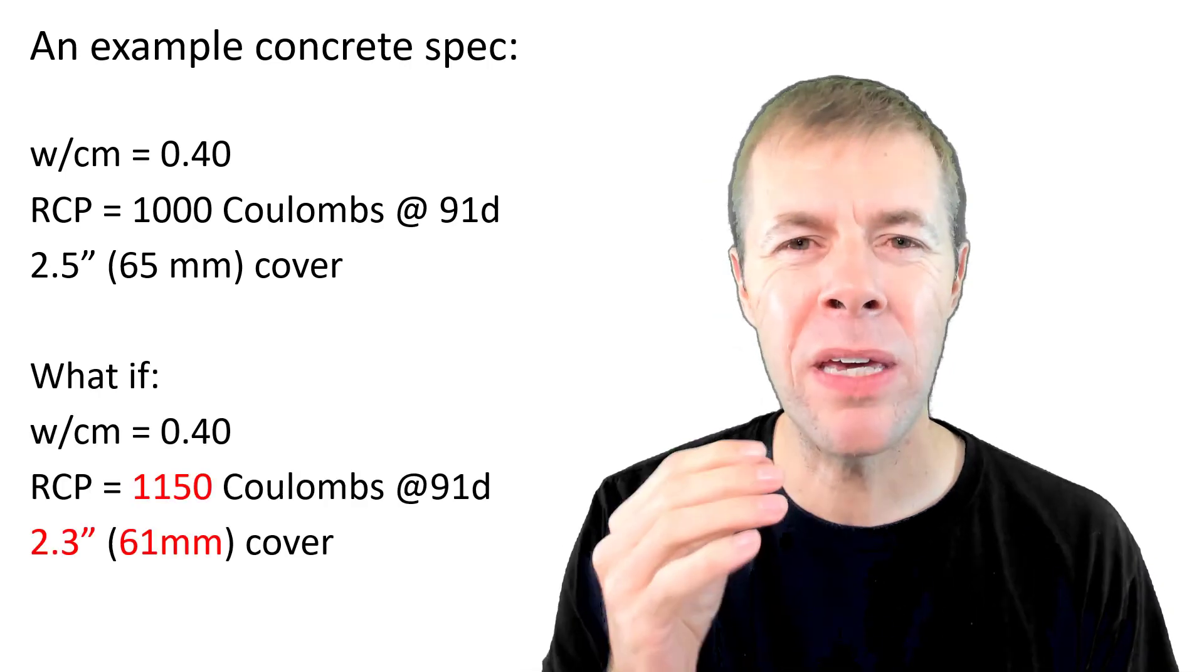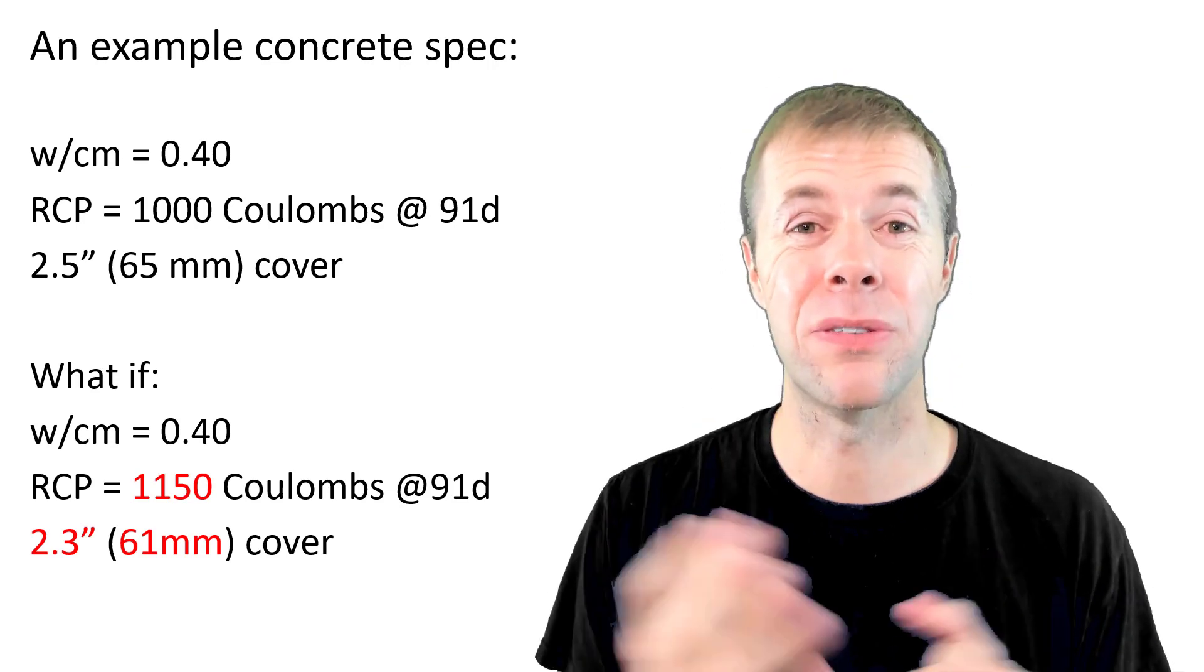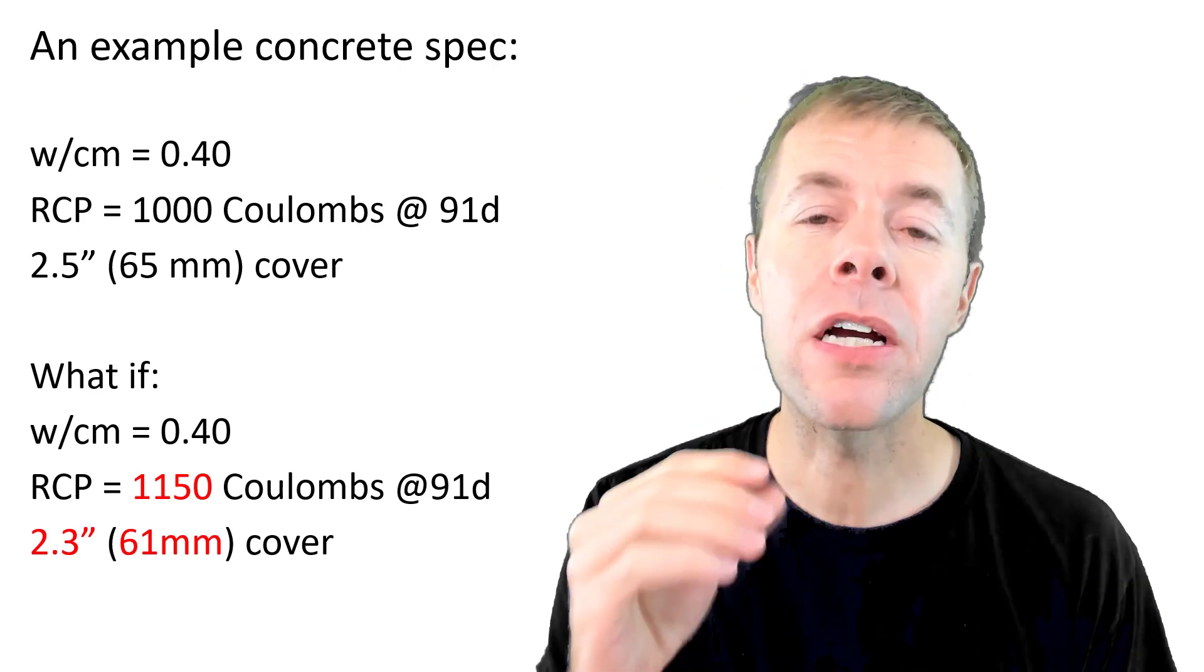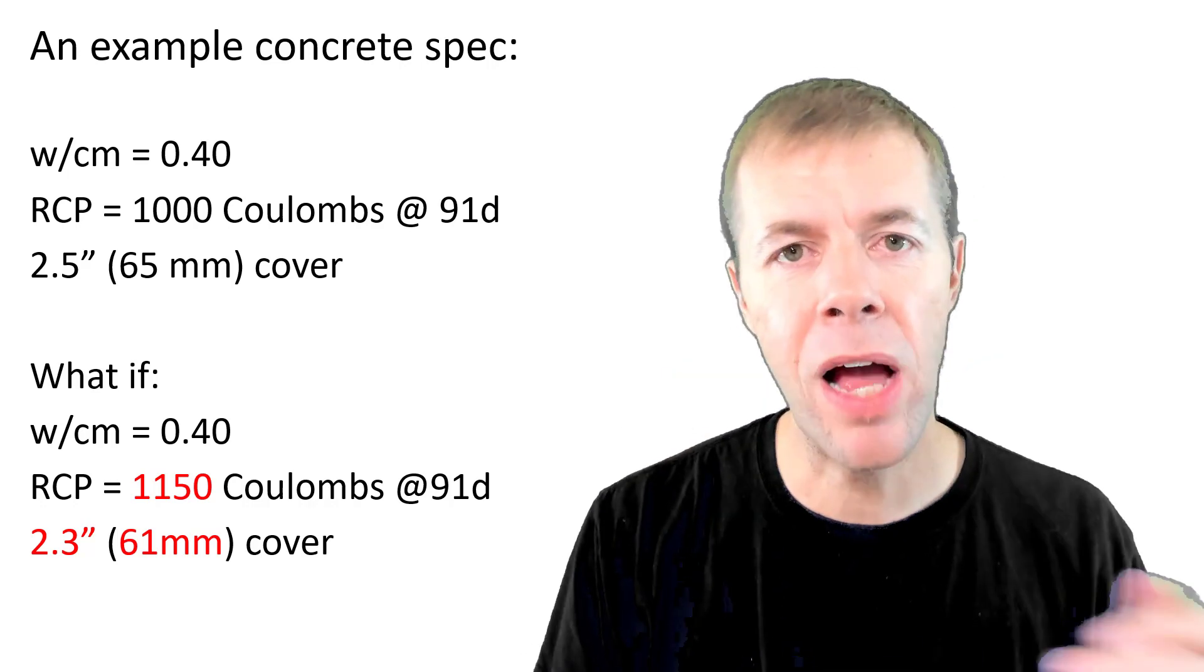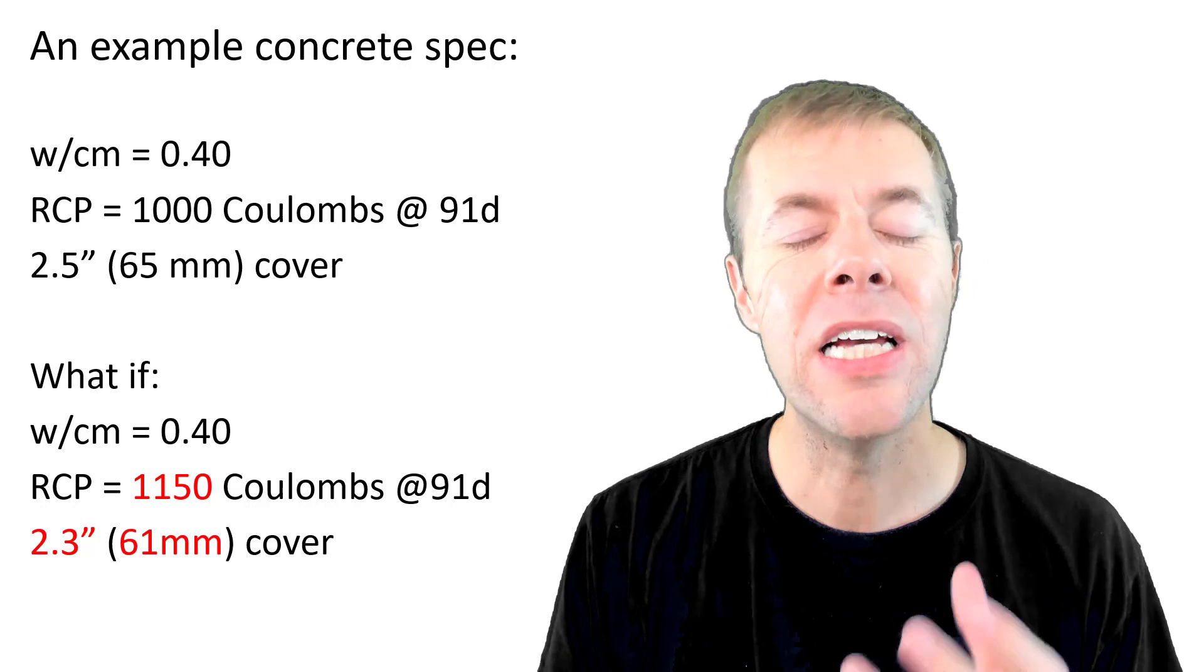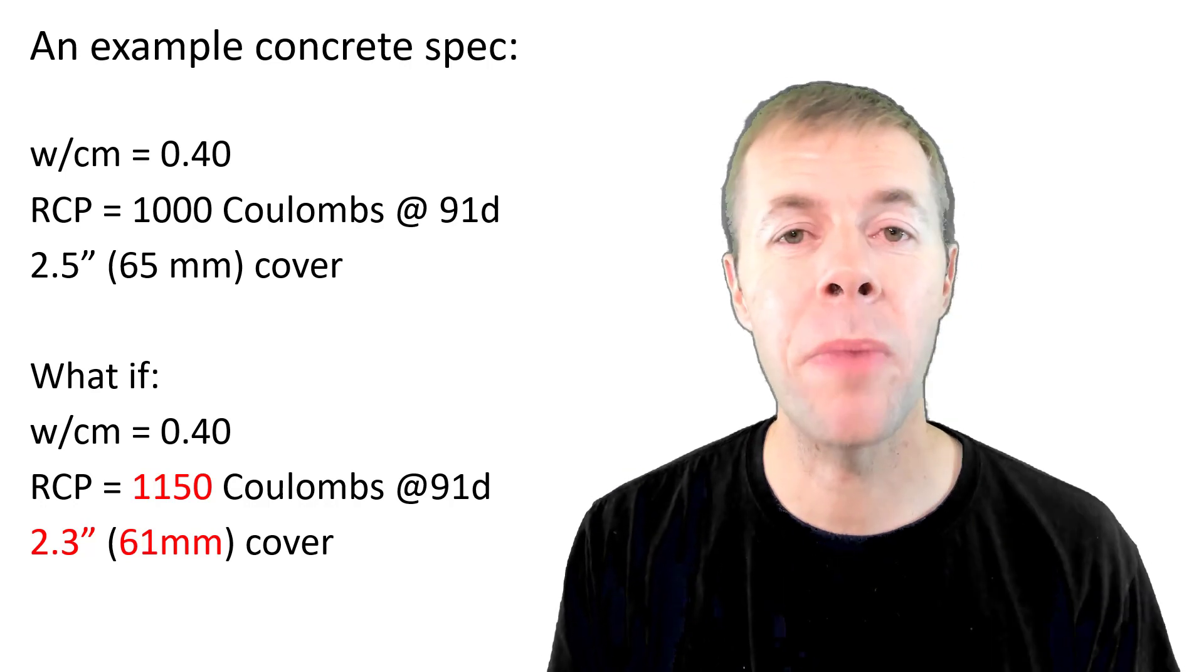My RCP value may be a little bit high. That means I'm worried about the permeability of my concrete. My cover may be a little bit low. That means that the distance from the outside surface to my rebar isn't what I want. My structure may not last as long. But what do you do about this?